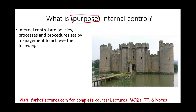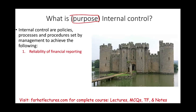The policies and procedures are designed to achieve four objectives. One: reliability of financial reporting — simply put, the quality of the financial reporting. How good are your financial numbers? Your balance sheet, cash flow, income statement, all account balances and reported transactions — are they reliable?